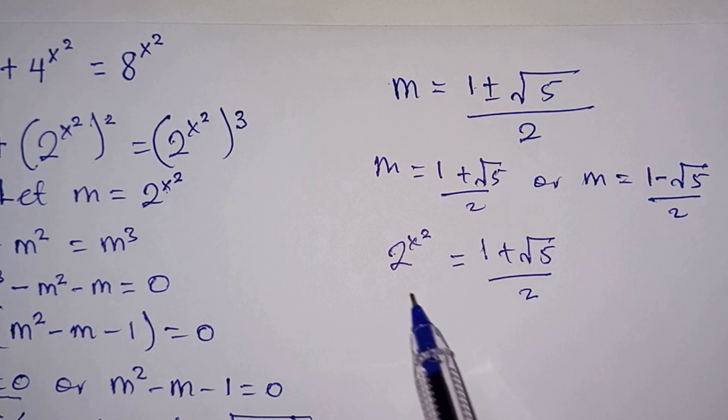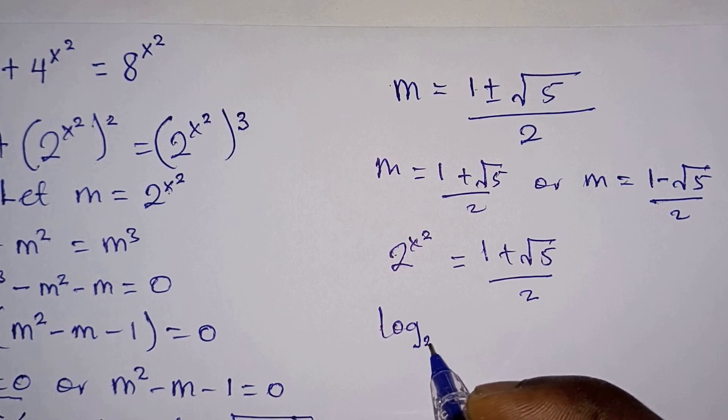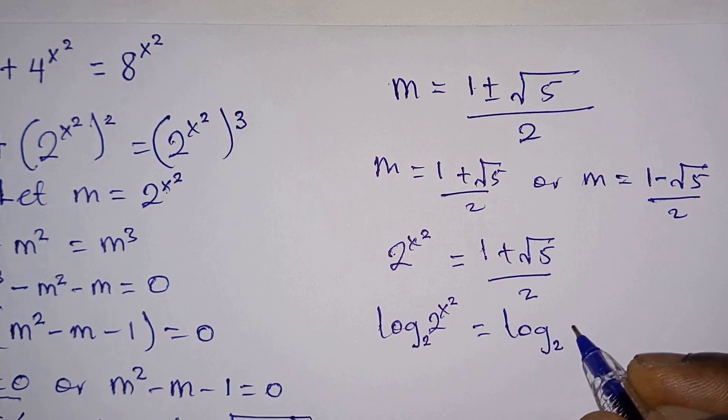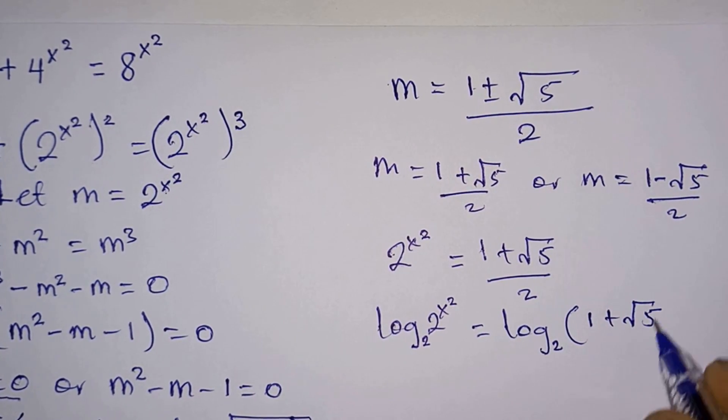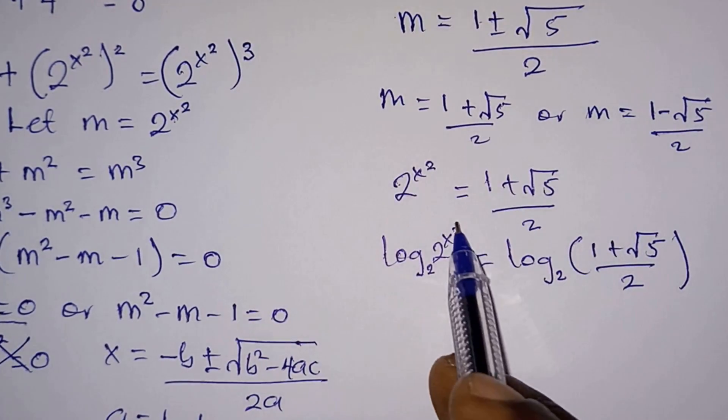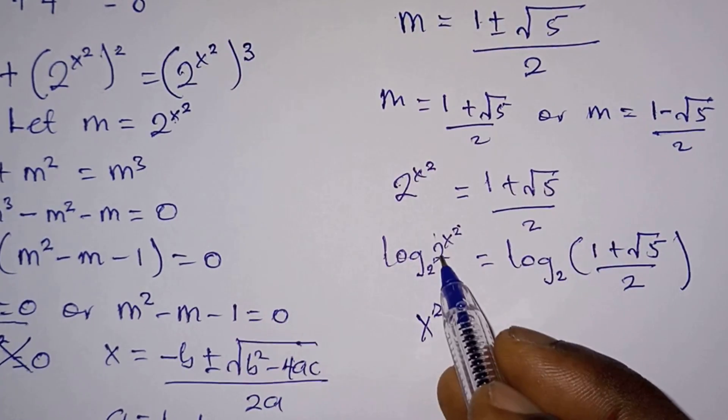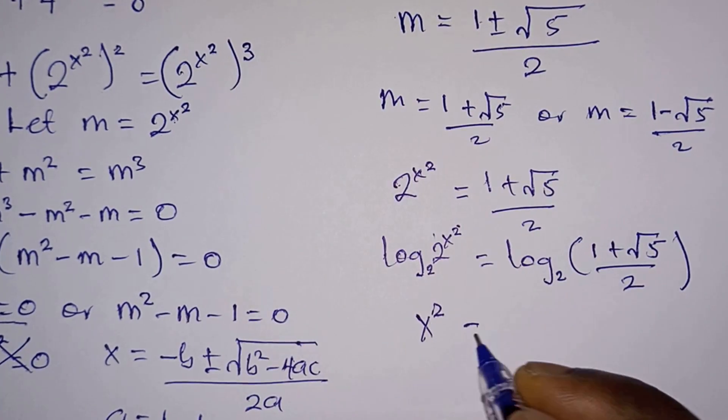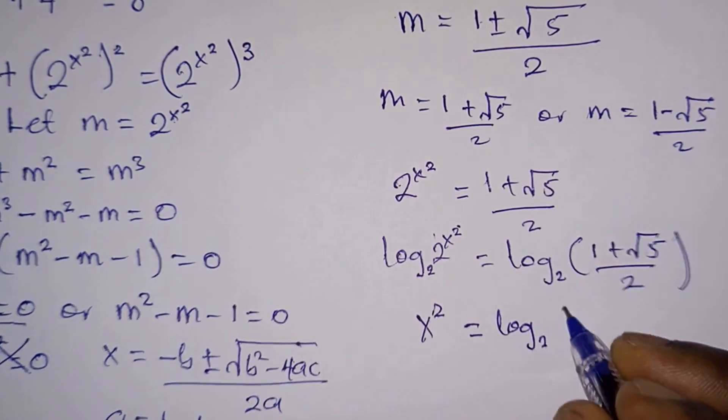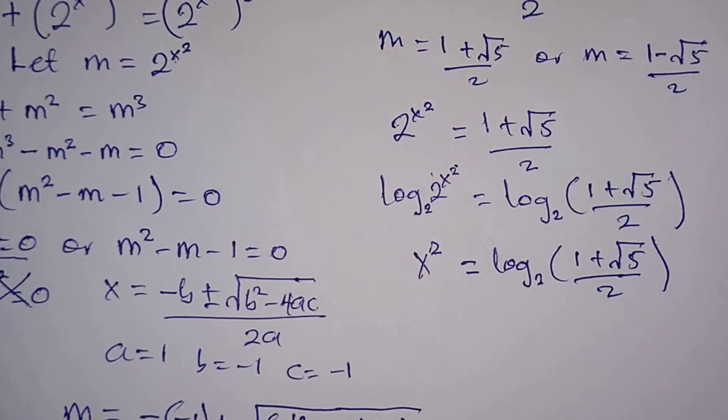Now let's introduce log in base 2 on each side of the equation. Log base 2 of 2^(x²) = log base 2 of (1 + √5) / 2. Now from log, the exponents become the leading number, so we're going to have x² times log base 2 of 2, which is 1, so we will have x² = log base 2 of (1 + √5) / 2.